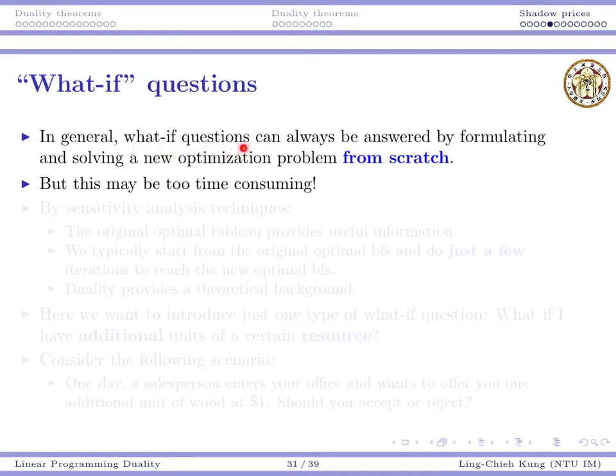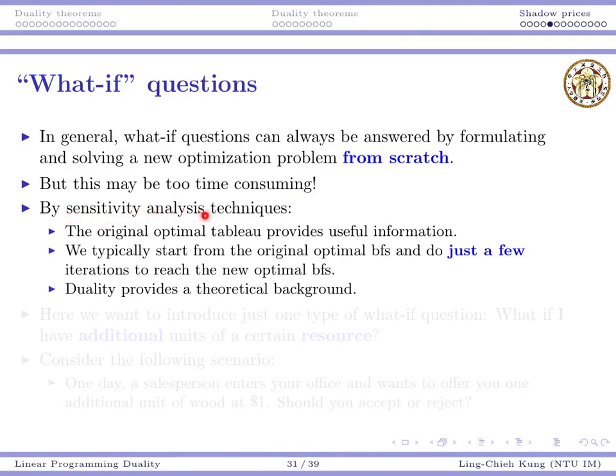So let's go back to our discussion. In general, what-if questions can always be answered in the following way. I know some parameters are changed. I want to ask what if one number becomes another number. So I just formulate a new optimization problem from scratch and then solve it. Certainly that's possible. But this may be too time consuming. Suppose you have a very large problem and each time you solve it, it takes a lot of time. And then just one tiny number changes and you need to do the whole process again. Then that's not very satisfactory.